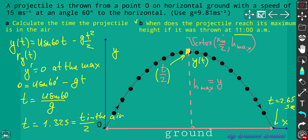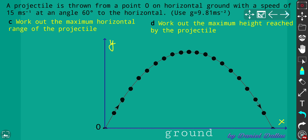So the projectile reaches maximum height at 1.325 seconds after launch. Since it was thrown at 11:00 a.m., it reaches maximum height at 11:00 a.m. and 1.325 seconds — that is the answer to question (b).